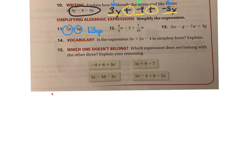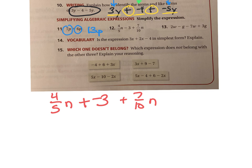Number 12: 4 fifths n minus 3 plus 7 tenths n. I want to make it into all additions, so I'm going to take the subtraction and make that into a negative 3. I have 3 terms in this expression: 4 fifths n, negative 3, and 7 tenths n.